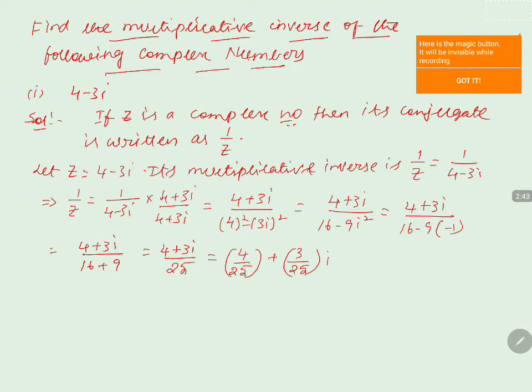So the complex number is also obtained 4 by 25 plus 3 by 25 into i. Therefore, we can say that the multiplicative inverse of 4 minus 3i is 4 by 25 plus 3 by 25 into i.